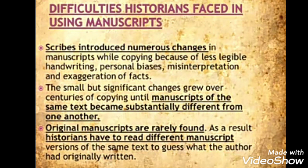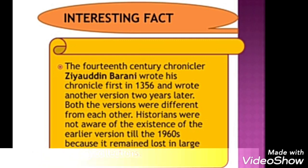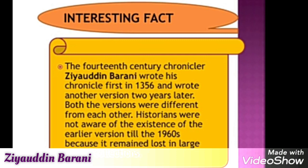So these are the difficulties historians faced in using manuscripts — the original manuscripts are rarely found. But there is another interesting fact: the 14th century chronicler Ziauddin Barani wrote his chronicle first in 1356 and wrote another version two years later. Both versions were different from each other, and historians were not aware of the existence of the earlier version until the 1910s. Here you can see Ziauddin Barani.